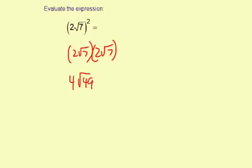49 is a perfect square. 7 times 7 is 49, so radical 49 is really 7. So we can have 4 times 7, which is 28.